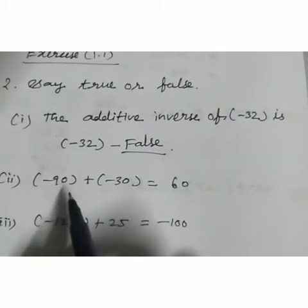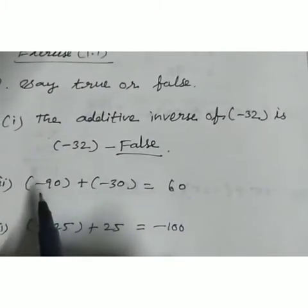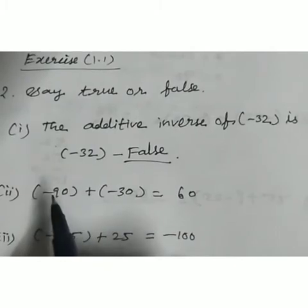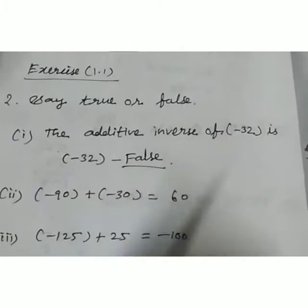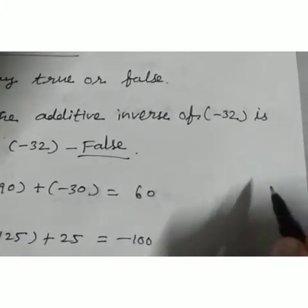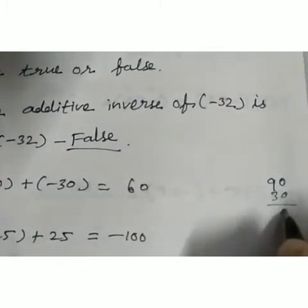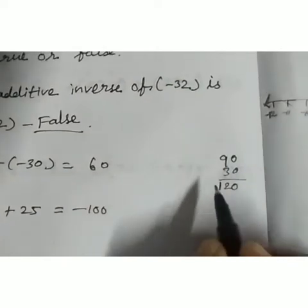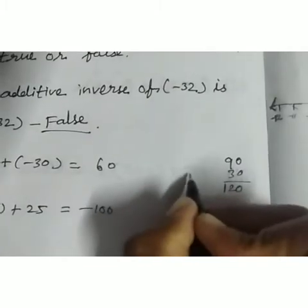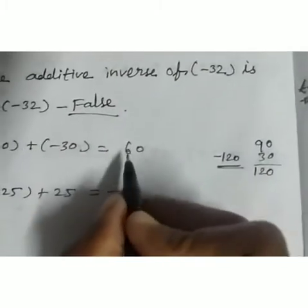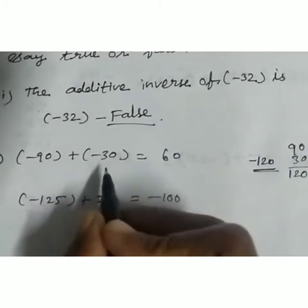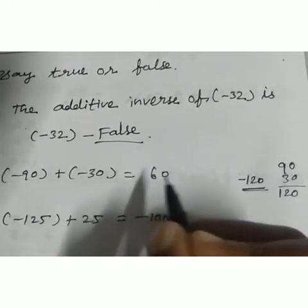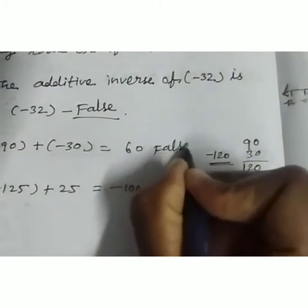Second question: minus 90 plus minus 30 equals 60. Here both integers have the same sign — minus and minus. So we add the two integers: 90 plus 30. 9 plus 3 is 12, so we get 120. Same sign, so we put the same sign: minus 120. But the statement says 60. So the statement is false.